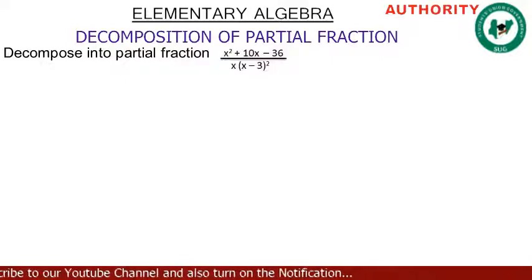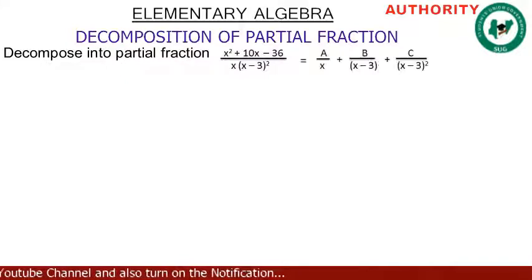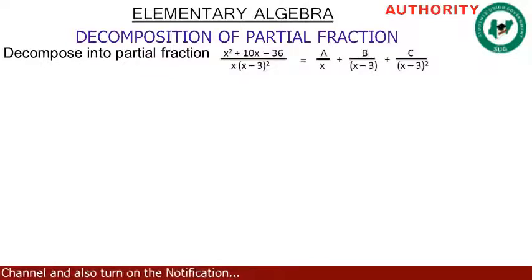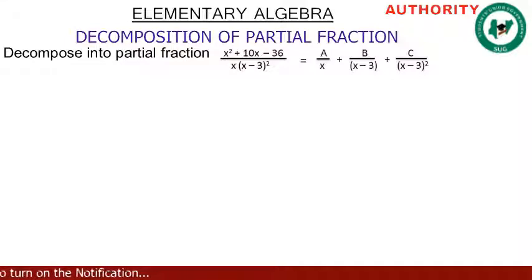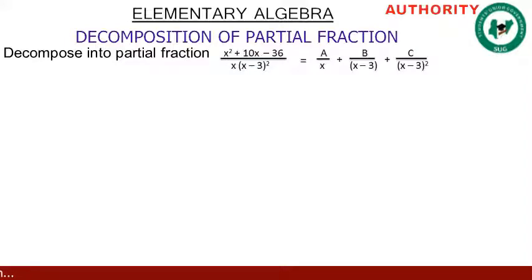We're going to split this into three parts: A all over x, plus B all over (x minus 3), plus C all over (x minus 3) squared. These are going to look like that. Okay, good.